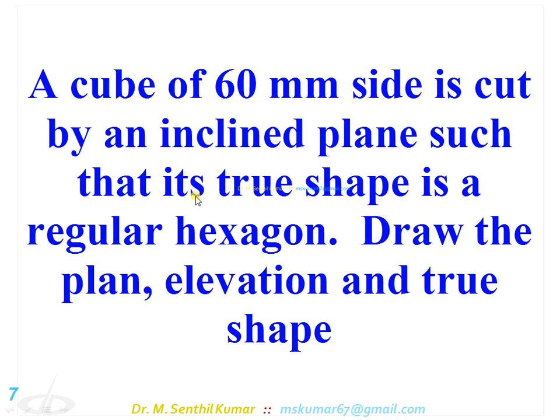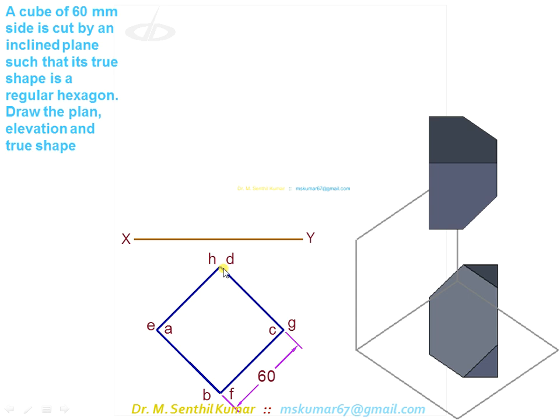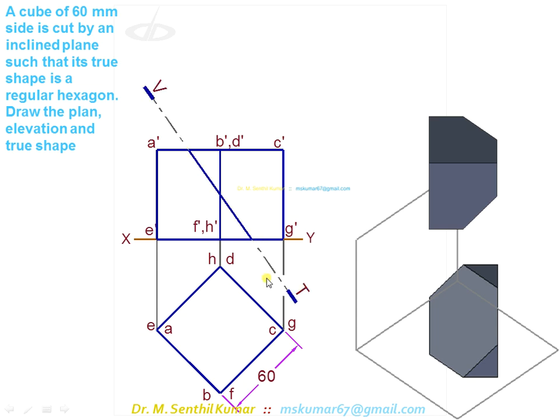There is a standard procedure for it. First, draw the top view - a square such that all edges are equally inclined to XY. Get the corresponding front view. Next, introduce the section plane as a line in front view such that it is entering at the midpoint of a'b' and exiting at the midpoint of f'g'. Like that, you have to introduce the section plane, then only you will get the true hexagon as a true shape.